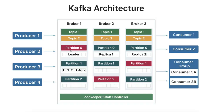In terms of replication, each partition is replicated across multiple brokers, which provides fault tolerance. A partition has a single leader replica and multiple follower replicas. The leader is responsible for handling all read and write operations for the partition, while the follower replicas replicate the data from the leader. If the leader fails, one of the followers is automatically promoted to become the new leader, ensuring high availability.